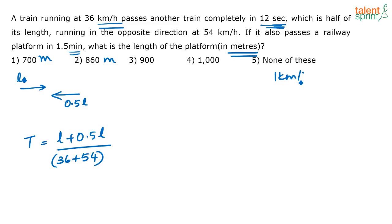We know 1 km per hour is equal to 5 by 18 meters per second. So here just do into 5 by 18, right? That 18 will go up. So this is the time taken, this you know that is equal to 12, right?